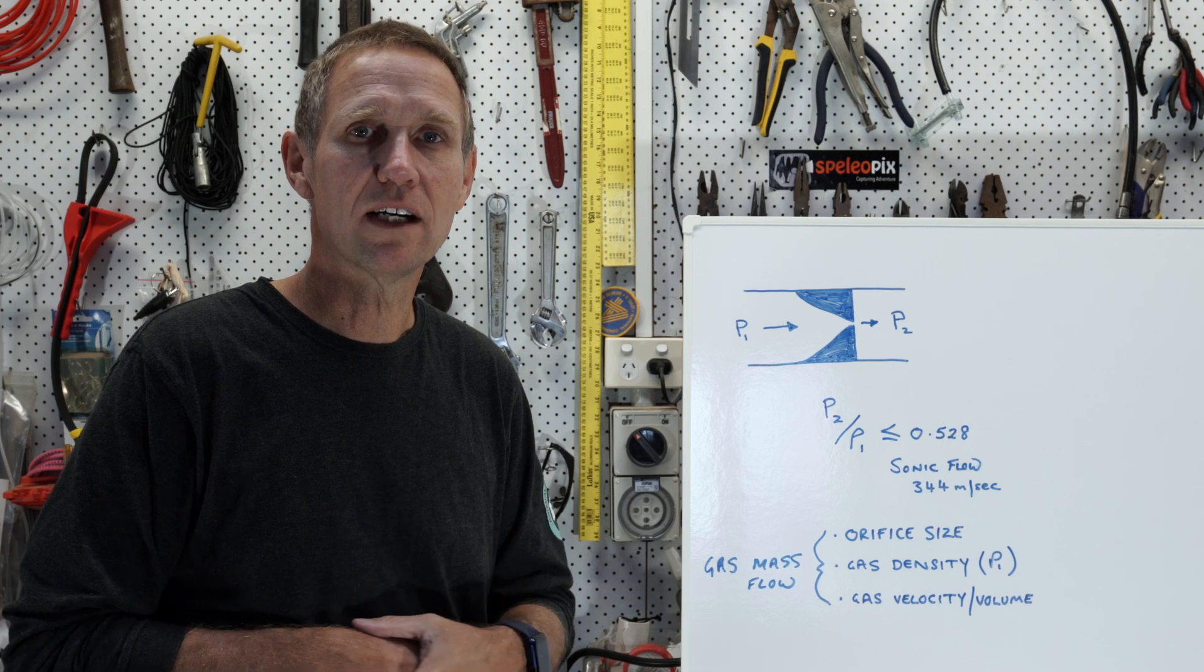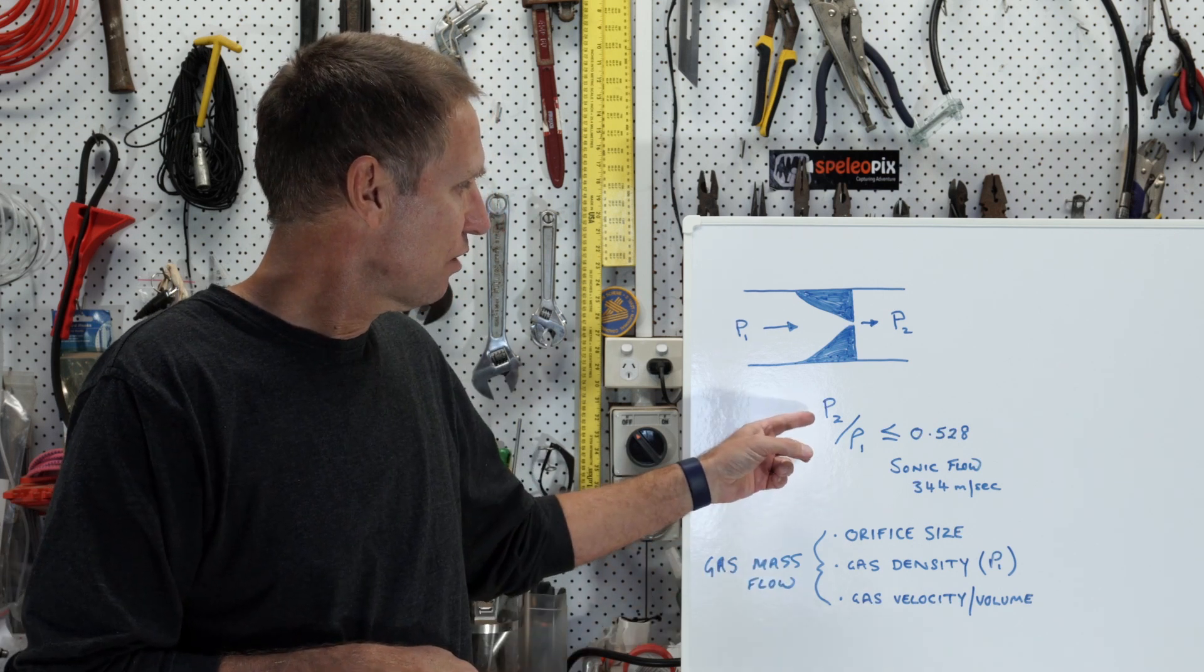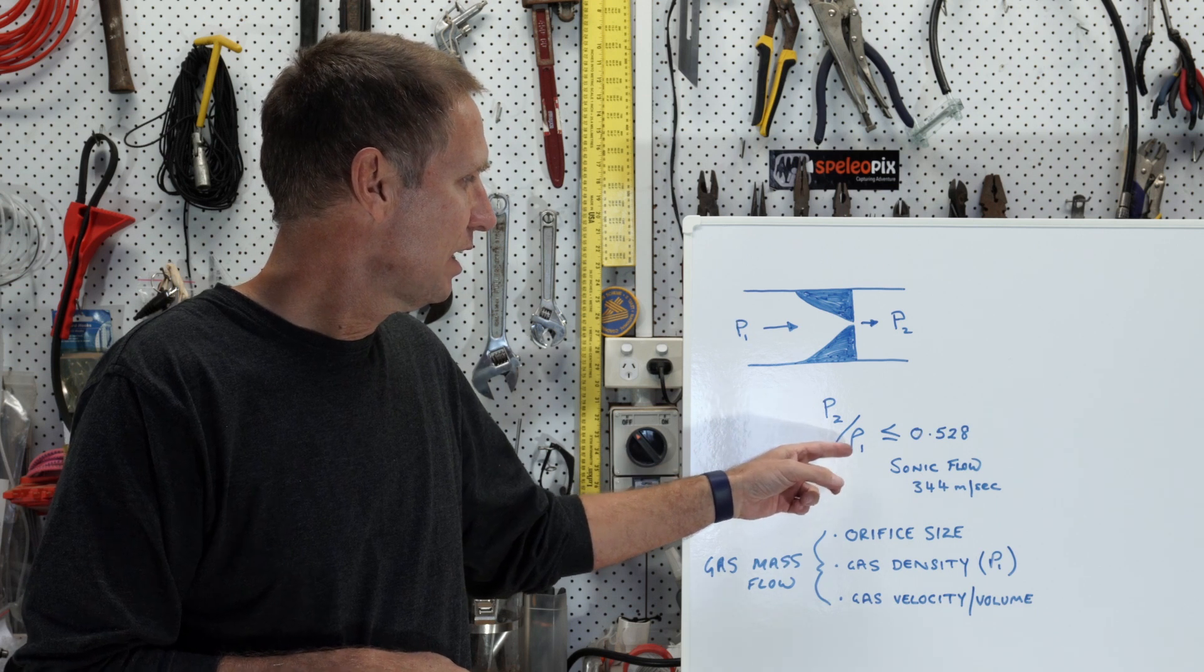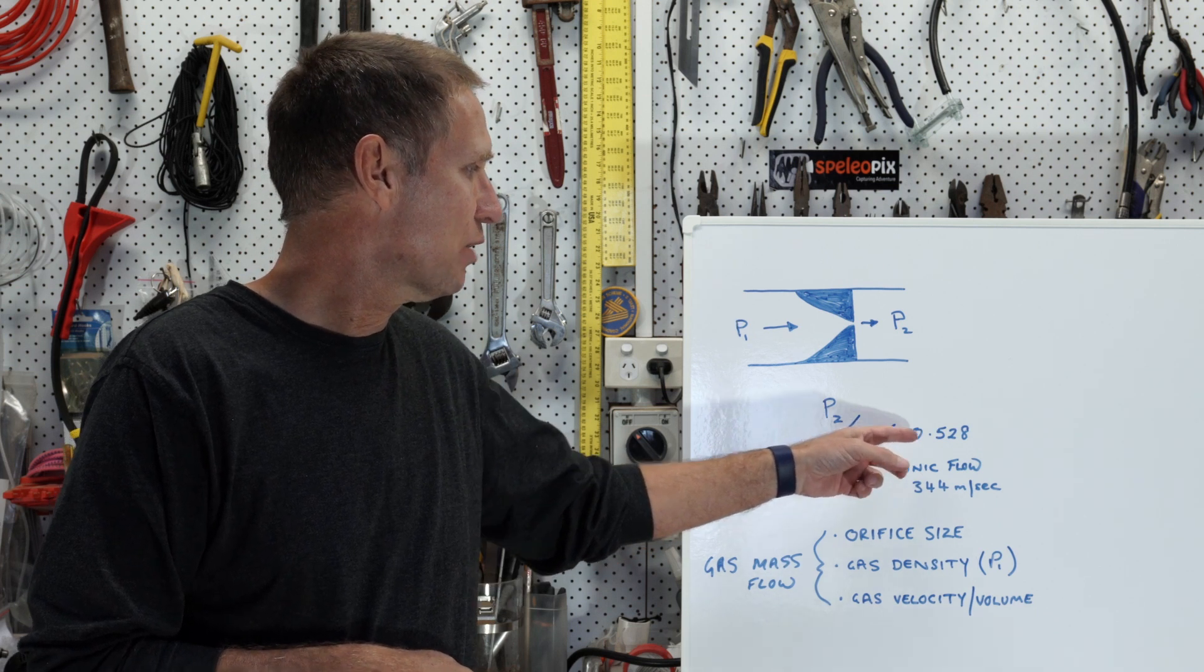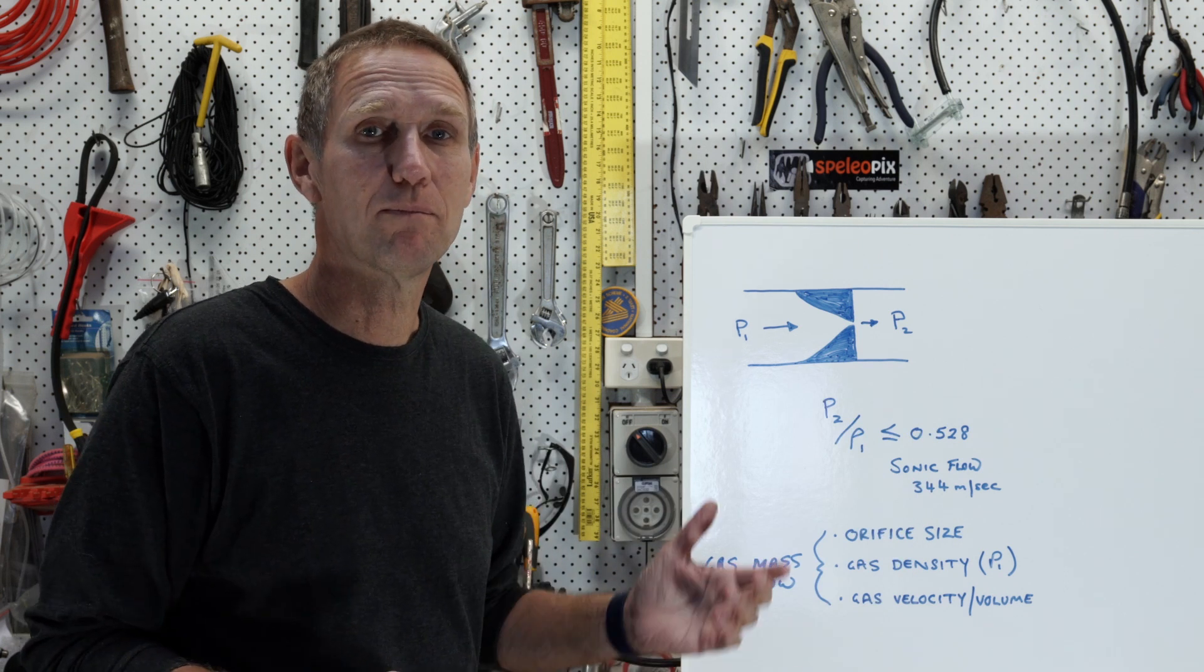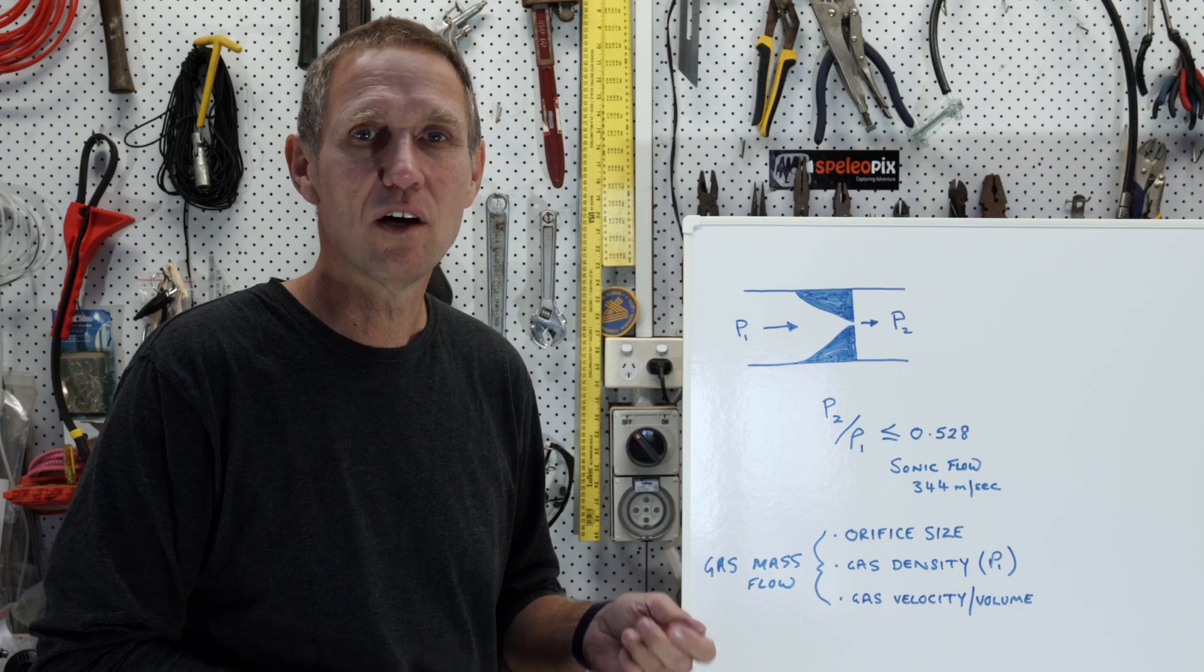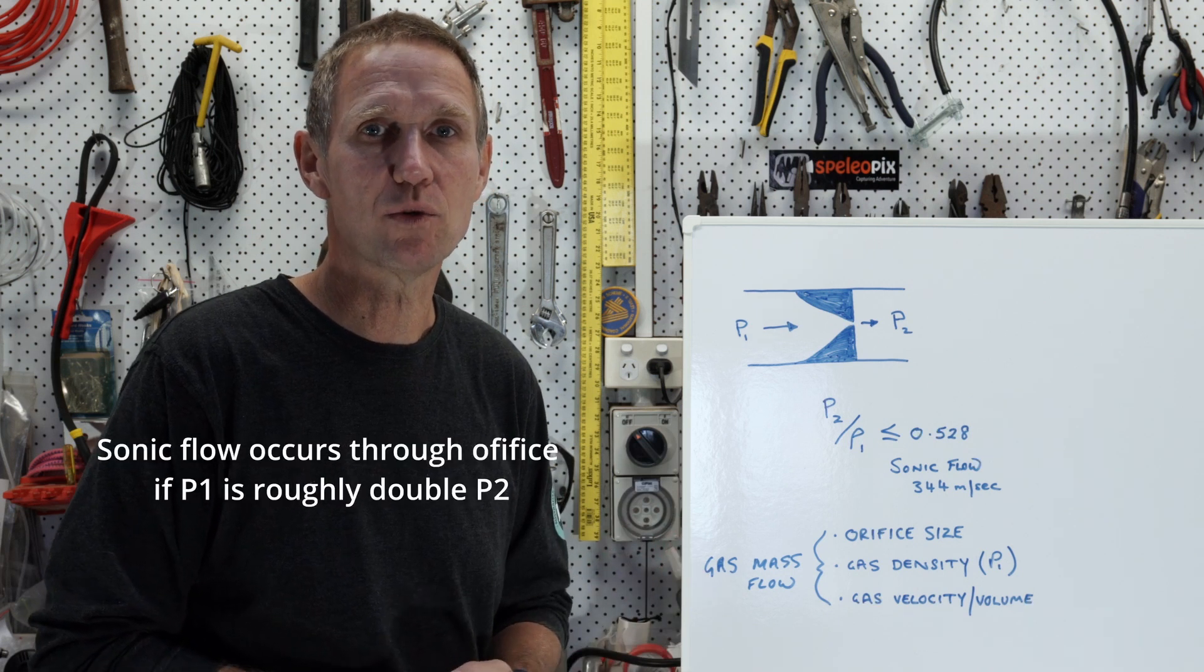Now there's an important number which we need to know, and that is the ratio of P2 divided by P1, which needs to be less than or equal to 0.528. In other words, P1 needs to be just about double P2 for what's called sonic flow to occur.